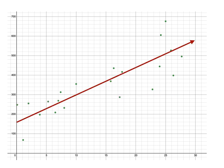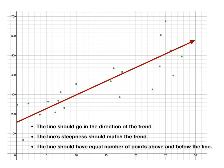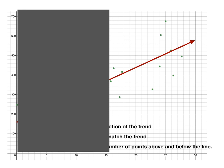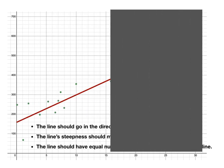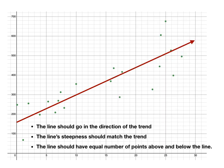If I change the steepness a little, I get a trend line that looks much better. Checking the criteria: the line goes in the direction of the trend — upward, which matches. The line steepness matches the trend — that looks pretty good. And the line should have equal numbers of points above and below. Using the cover-up strategy: looking at the second half, they're pretty balanced; looking at the first half, they're pretty balanced. So this is actually a pretty good trend line for this data.